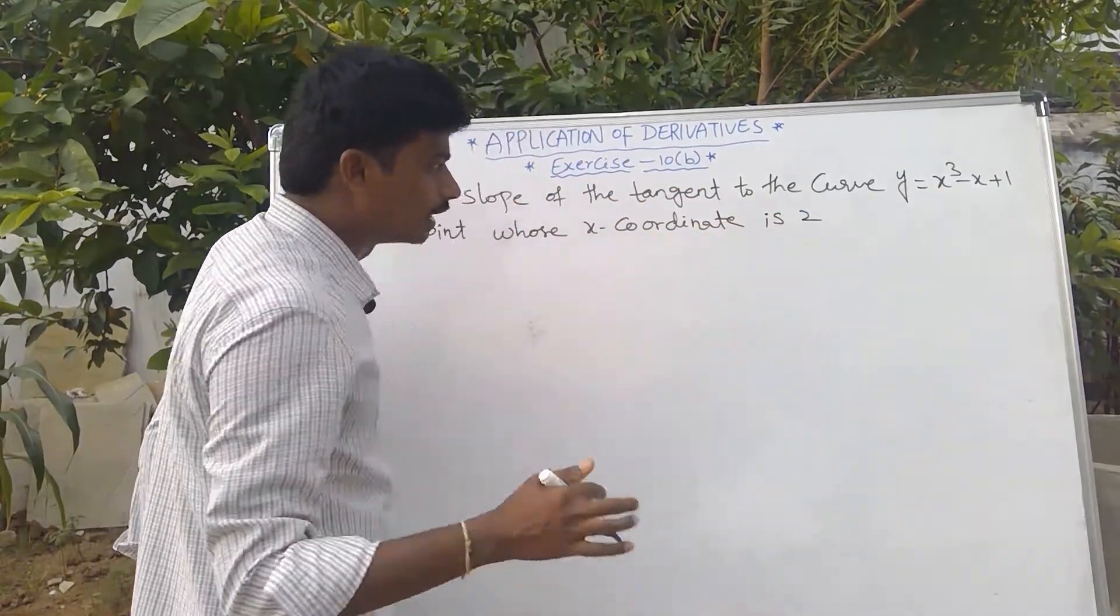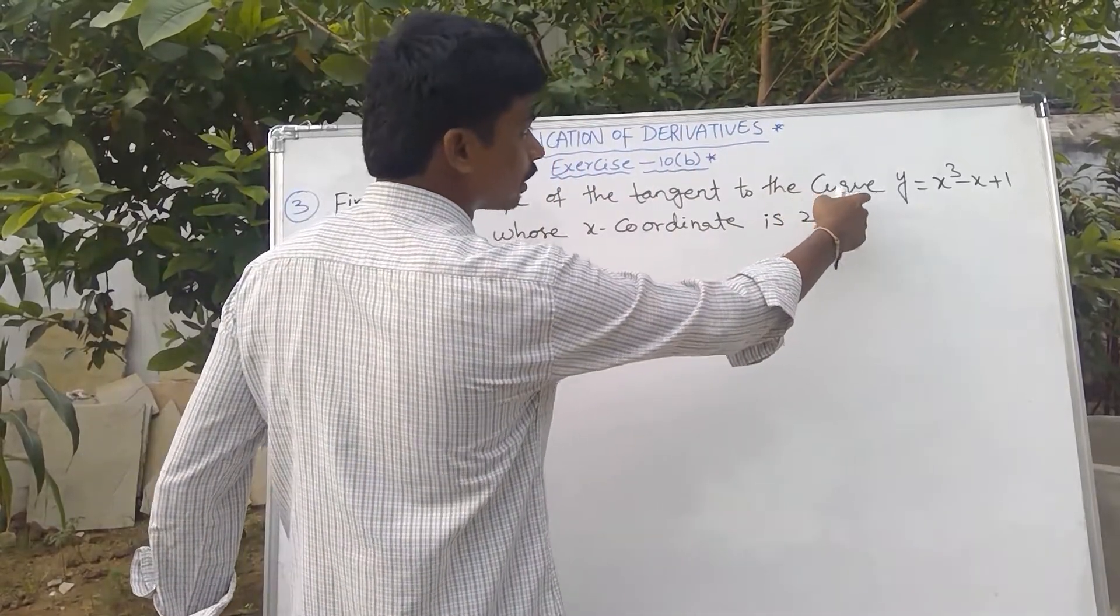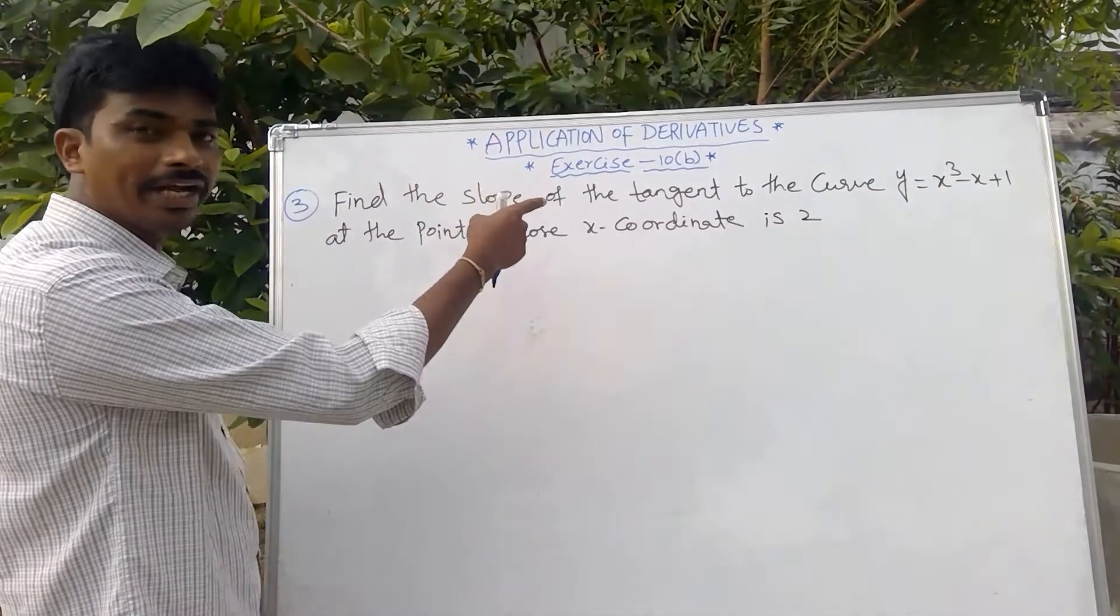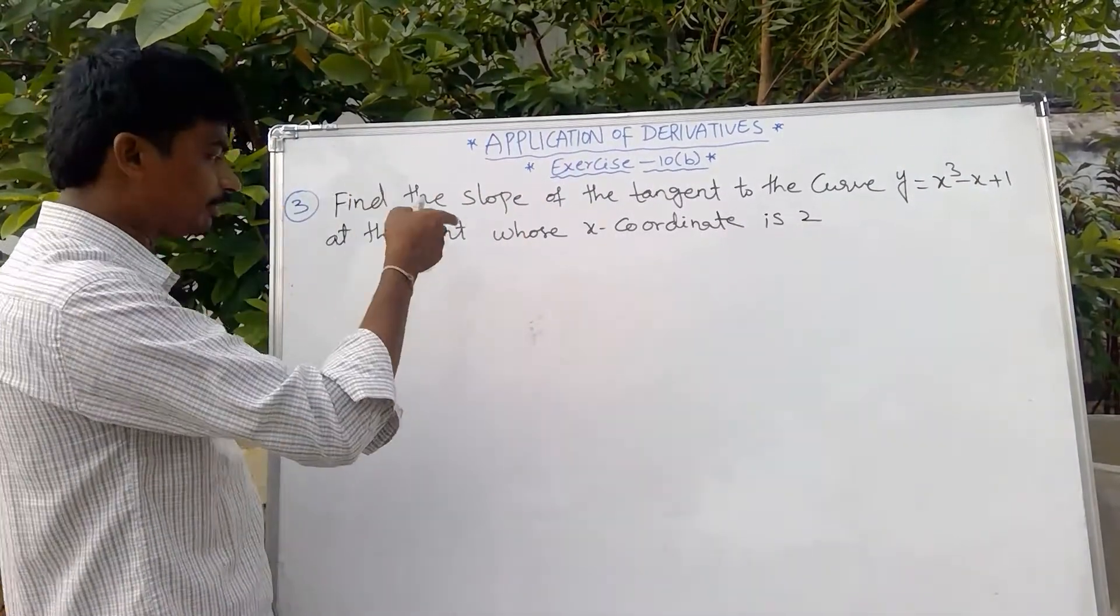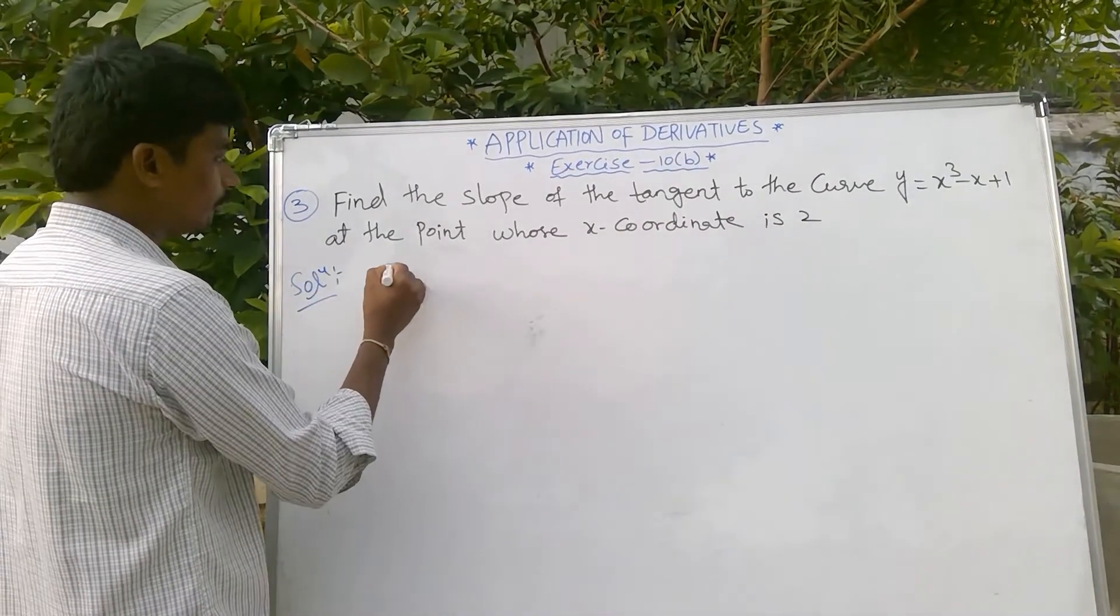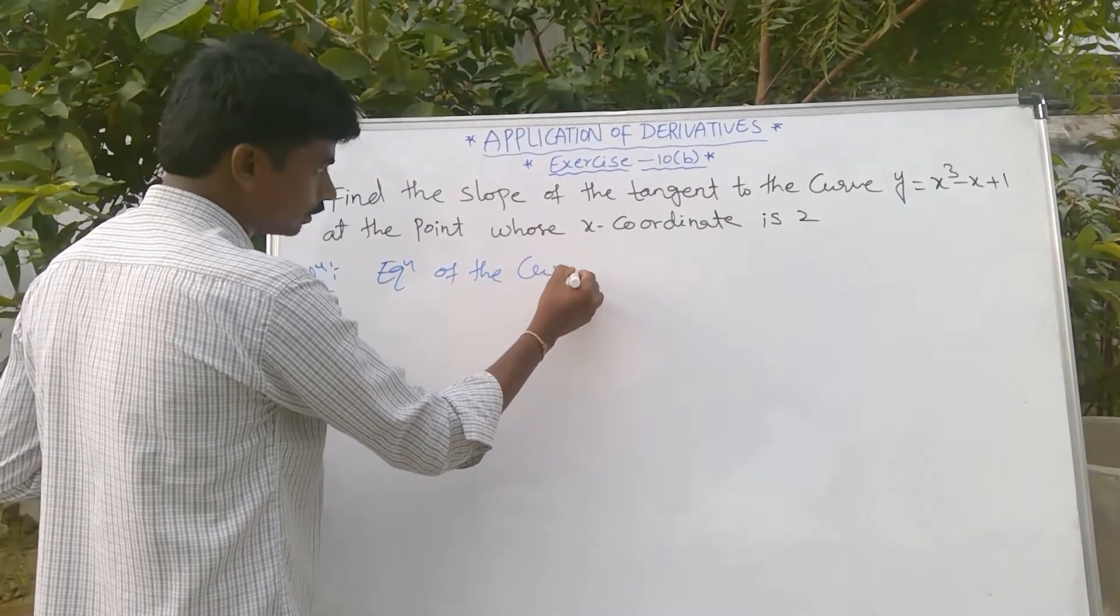That means x equals 2. Here, what is the curve? Equation of the curve: y = x³ - x + 1. Now what we find? Slope of the tangent. Solution: equation of the curve y = x³ - x + 1.